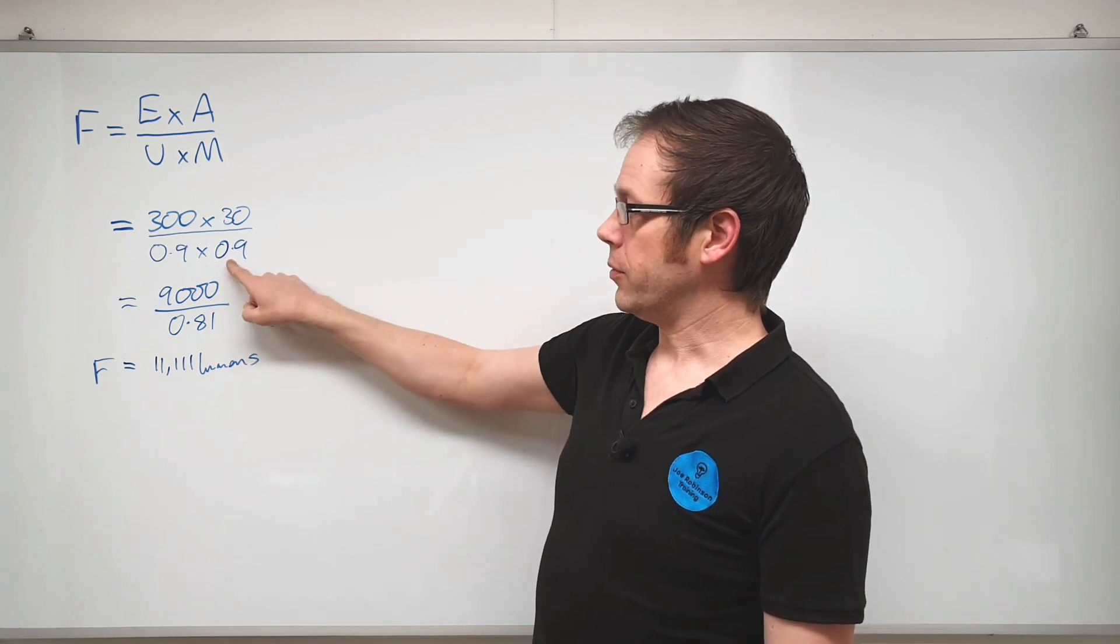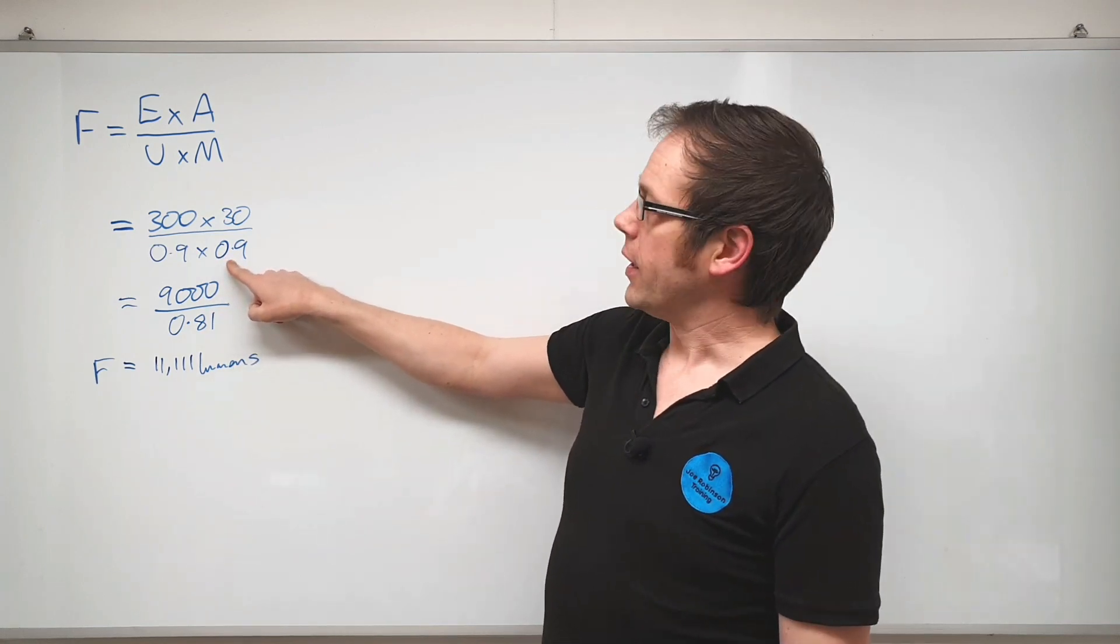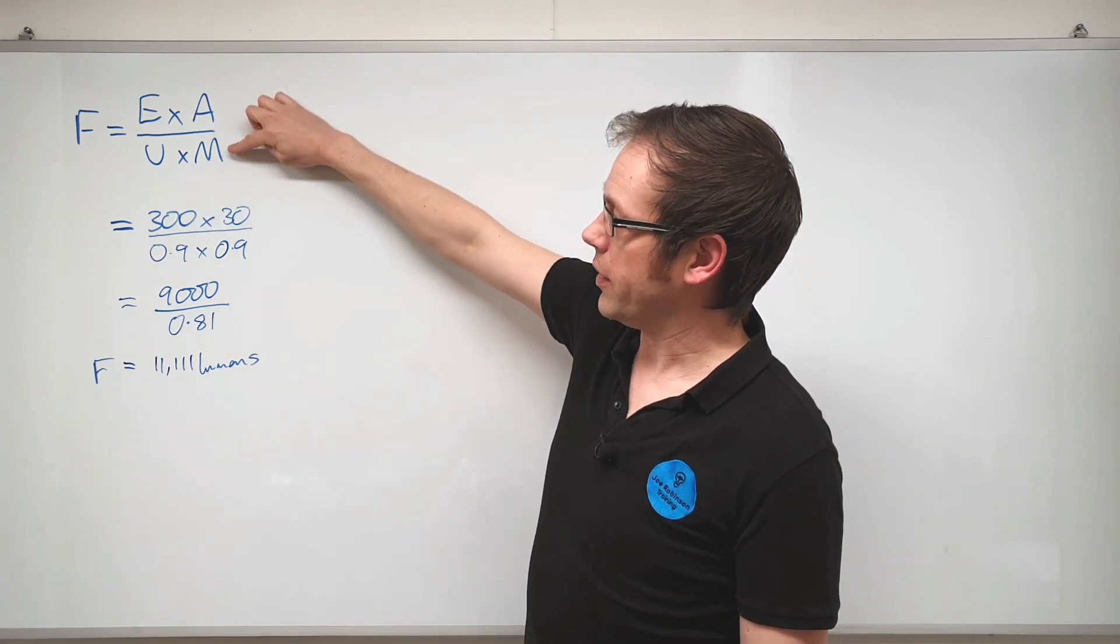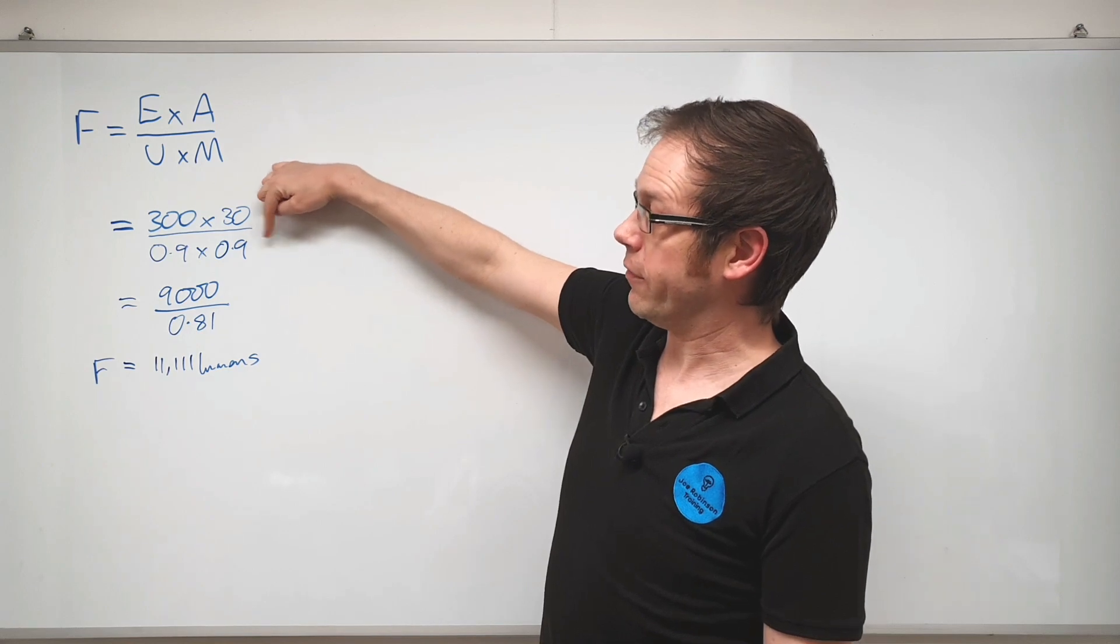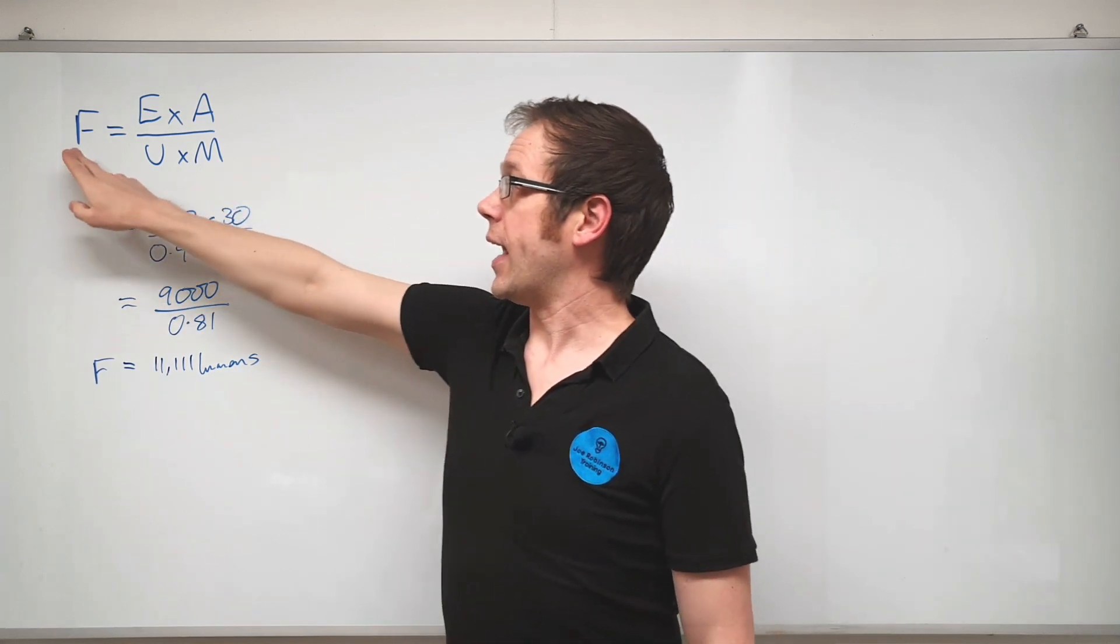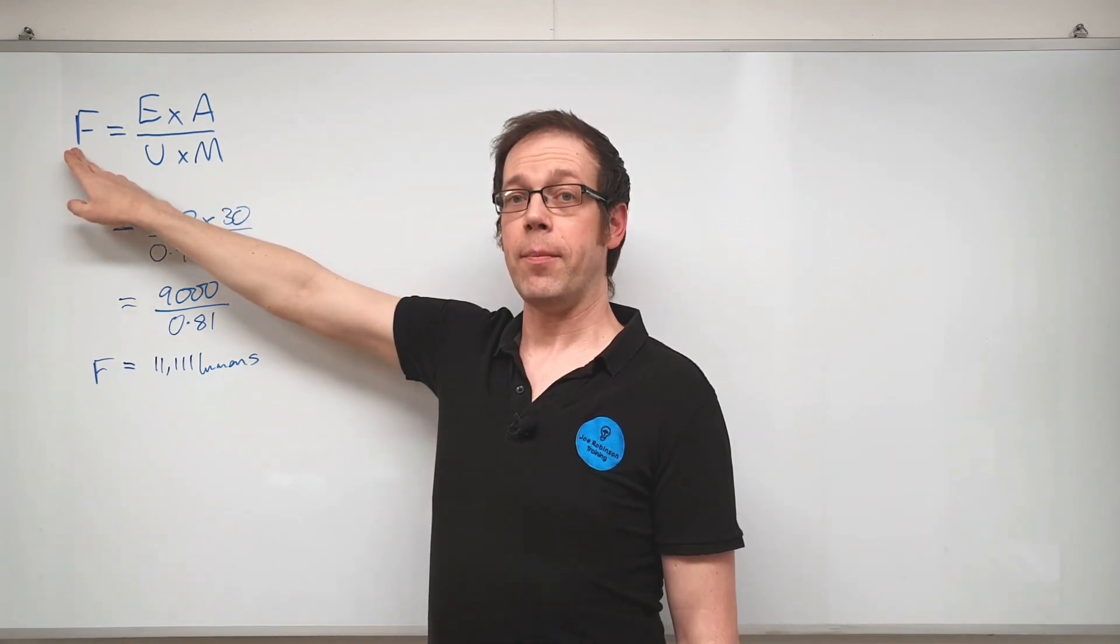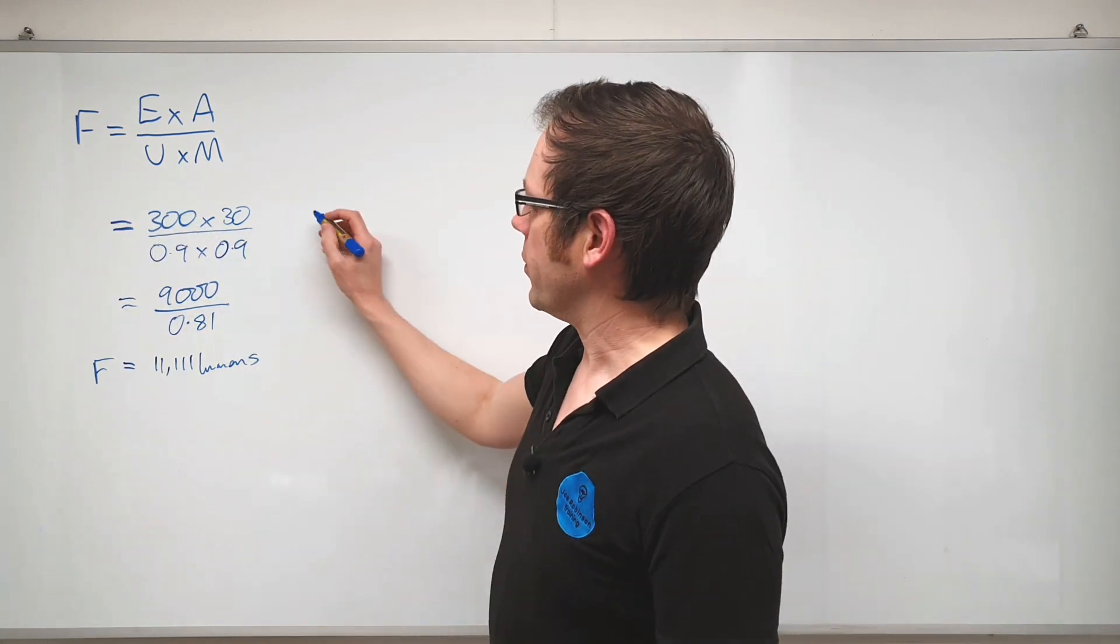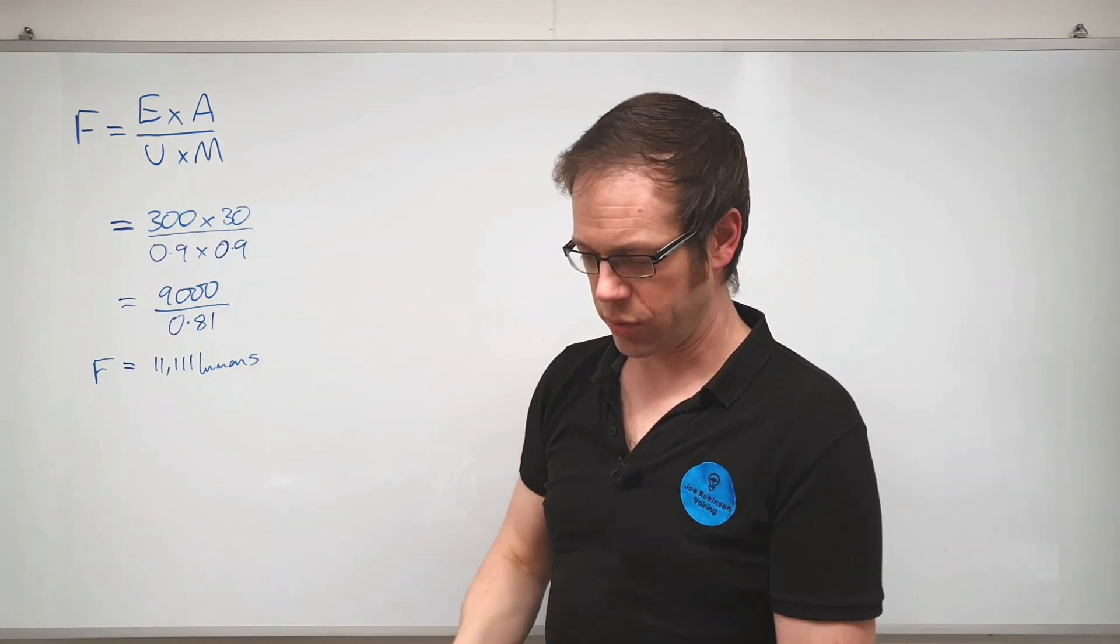Now if you think about that, this number here—if we make the number that we're dividing by in this case get even further away from 1, again this number is going to get bigger again. Let's illustrate that.